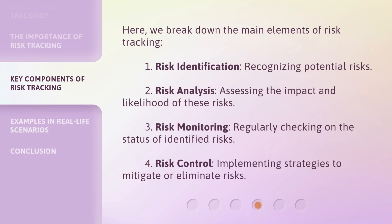Here, we break down the main elements of risk tracking. 1. Risk identification: recognizing potential risks. 2. Risk analysis: assessing the impact and likelihood of these risks. 3. Risk monitoring: regularly checking on the status of identified risks. 4. Risk control: implementing strategies to mitigate or eliminate risks.